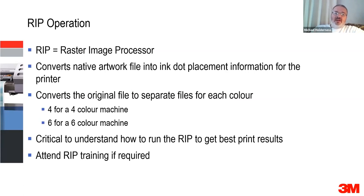We were talking yesterday about what sort of machine people should use. The bigger and the faster the better, because it's got quite a lot of work to do. For example, if you've got a four color printer, your RIP will create four separate files for the printer, each of them the same size as the original file. You'll end up with five times the original file size — the original plus four colors. If you've got a six color machine, then obviously it's six times, so you're creating some very, very big files.